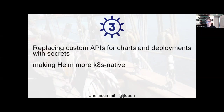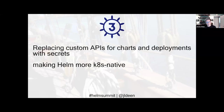We replaced custom APIs for charts and deployments with secrets. Previously, Helm 2 by default would store release history in a config map. Tiller was the in-cluster server-side component — anything defined on the client side got handed to Tiller, rendered to the Kubernetes API, and stored in a config map. Now you only have the client side, and your release history is stored as a secret object, which makes it more secure because you can tie it into secret management systems.